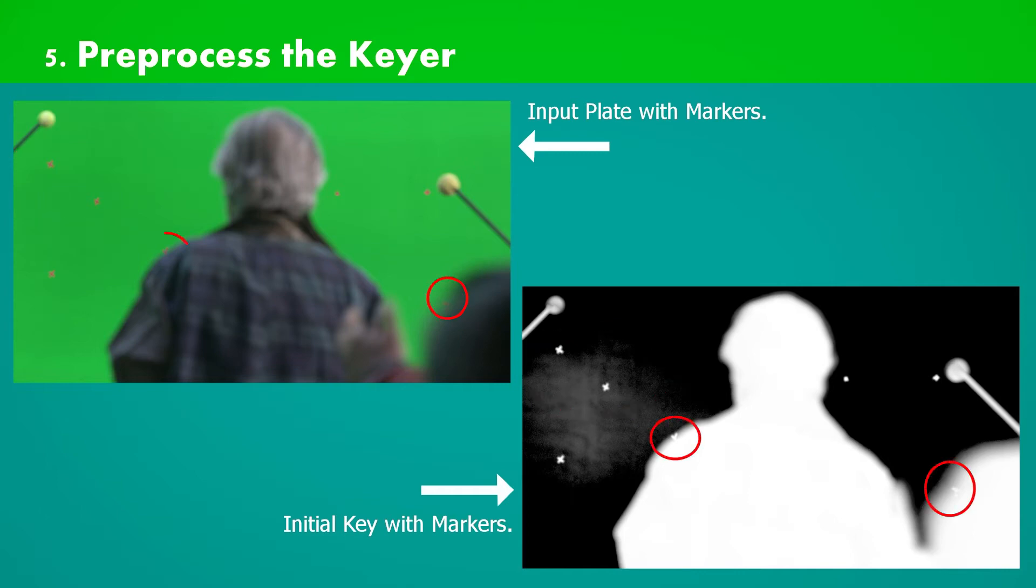The markers which are at distance have no big issue. They can easily be removed using garbage matte. But what about the markers which are too close and even some are blended with the character's soft edges? We don't want them at all.